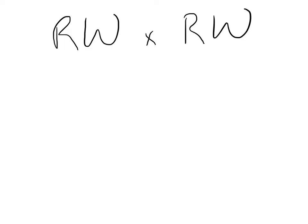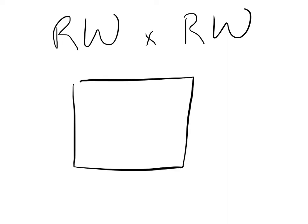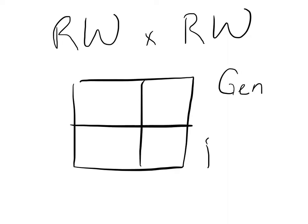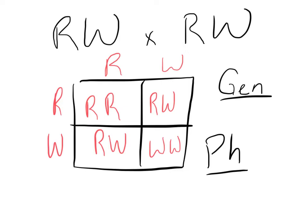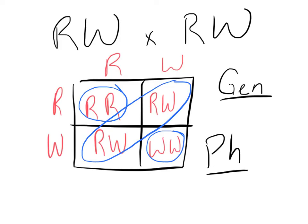Now I'd like you to pause the video and work out this problem: what would happen if you crossed two pink carnations? Using a Punnett square, what would be the genotype and phenotype ratios of the offspring? By crossing two pink carnations, the probability of the offspring would be that 25% should be red, 25% should be white, and 50% should be pink.